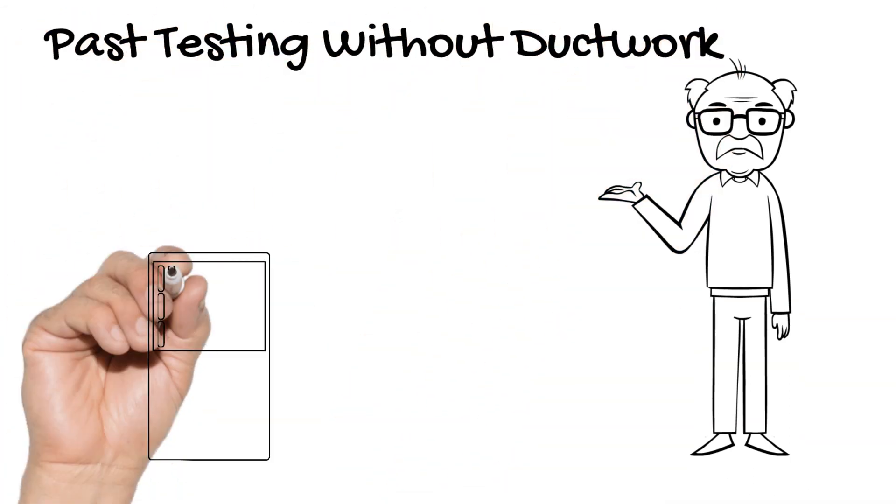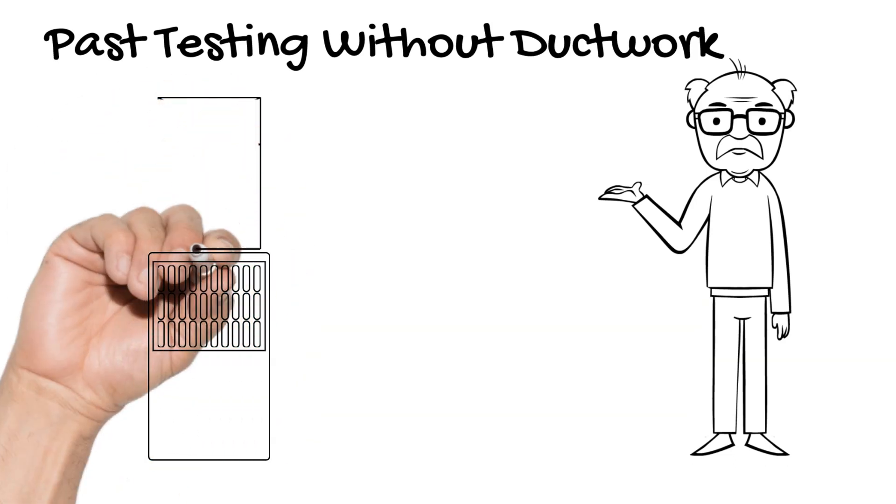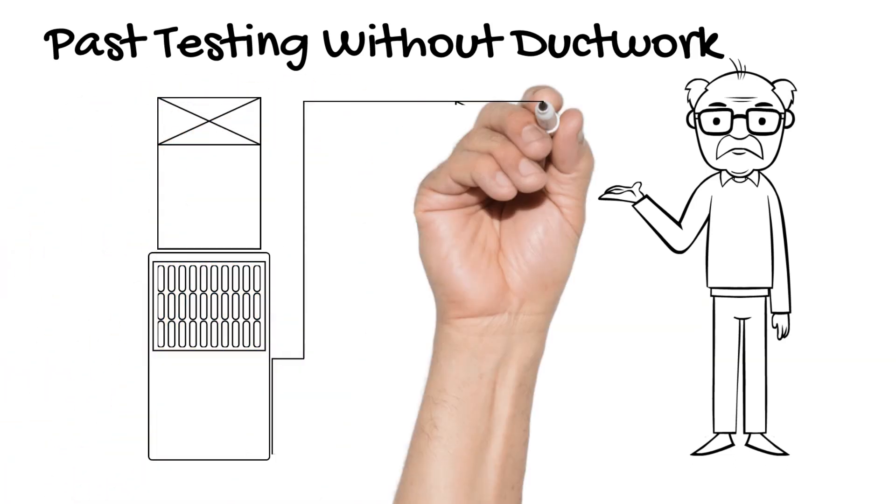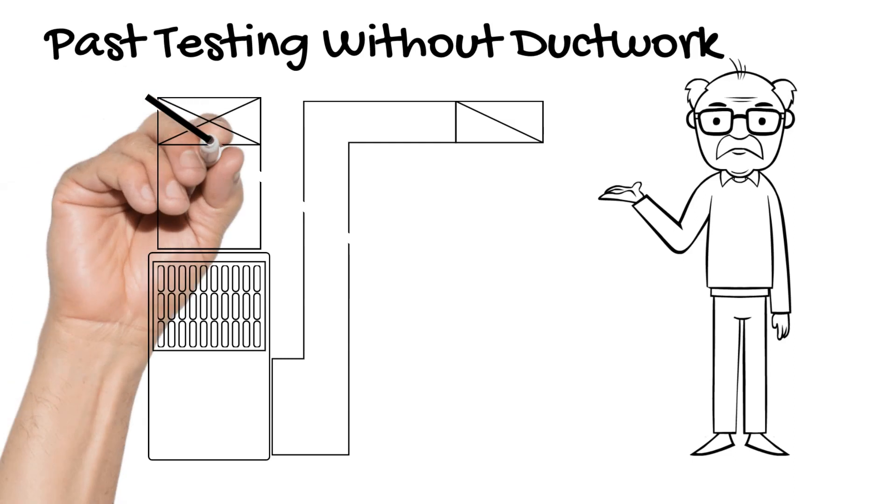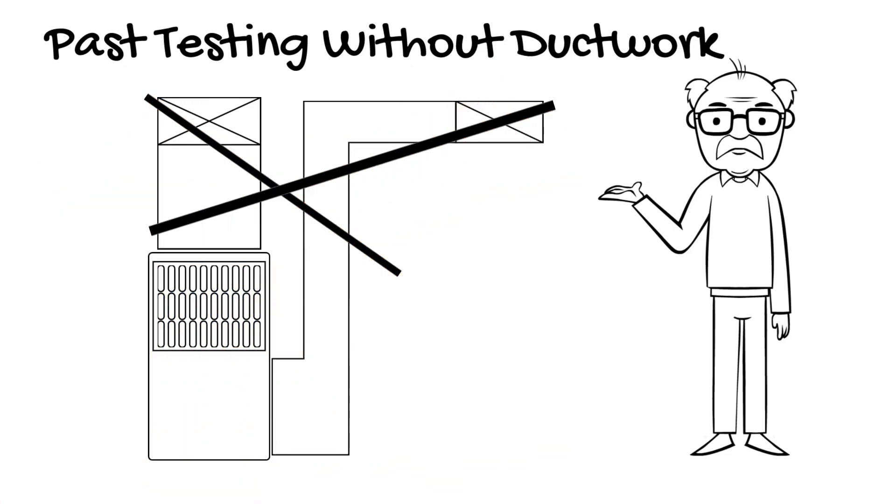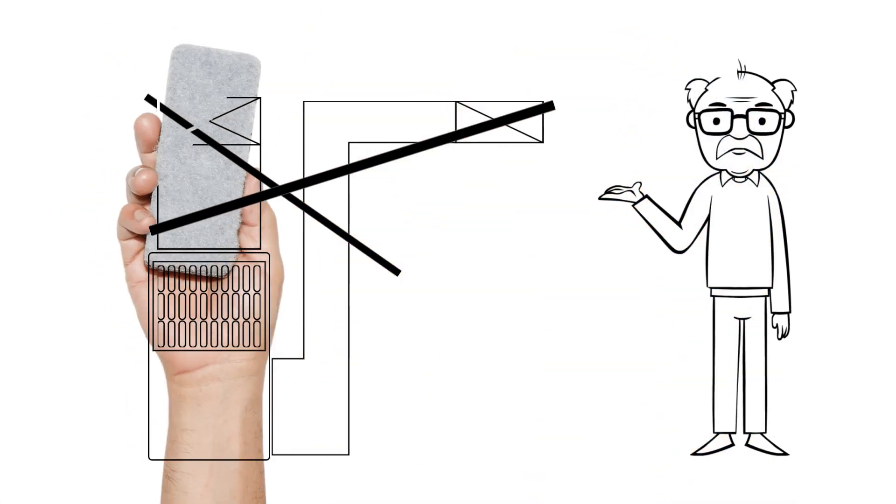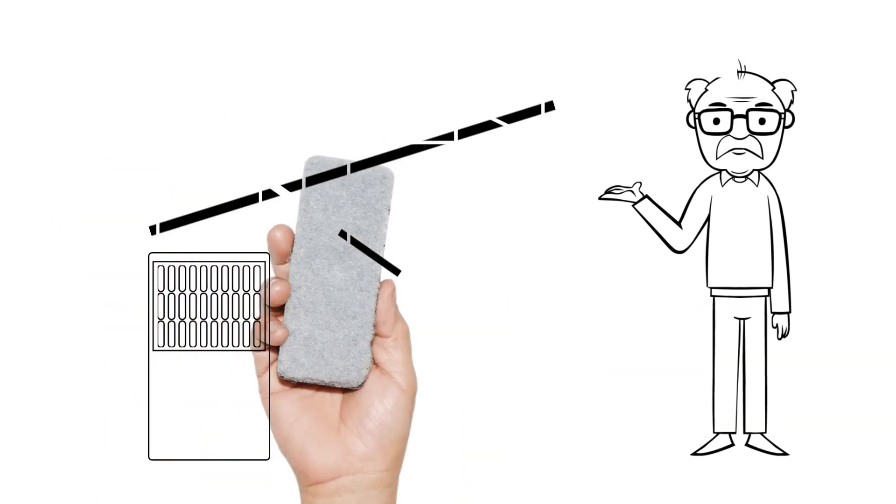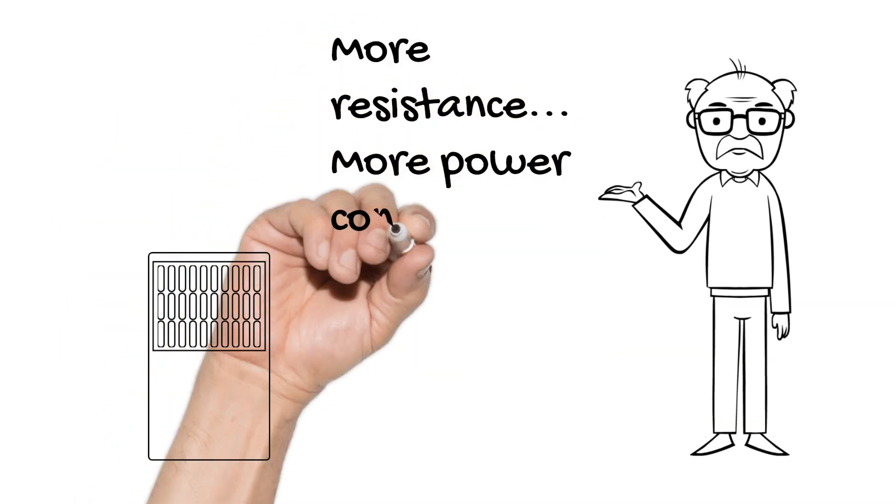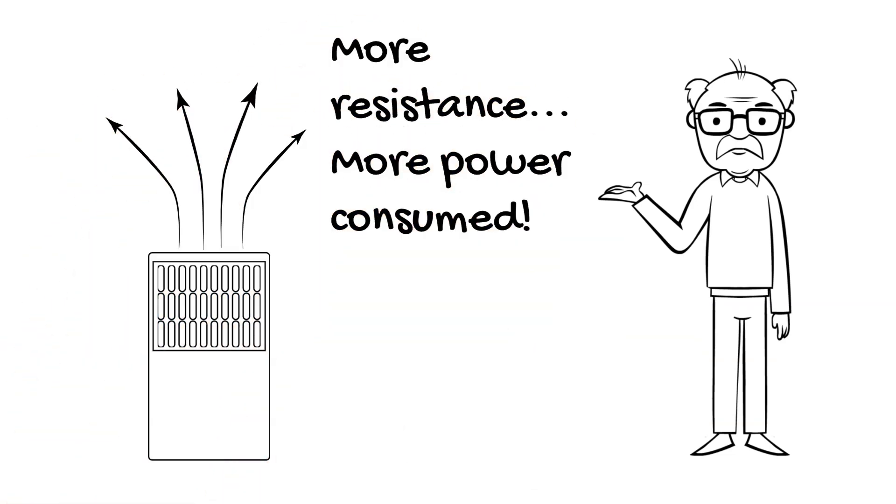In the past, SEER and HSPF measuring was performed with the indoor fan unit, furnace or air handler, having virtually no duct resistance to airflow. The greater this resistance, however, the more power consumed during operation.